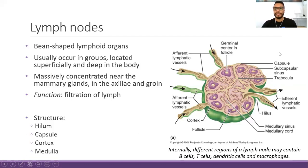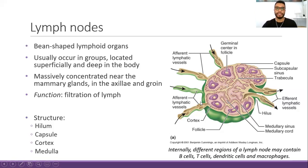This is the basic structure of a lymph node. Internally, in these different regions, we can find different types of cells: B cells, T cells, dendritic cells, and also macrophages. All those cells will act in this process of filtration inside the lymph node.